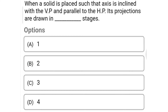Next question: when a solid is placed such that its axis is inclined to the vertical plane and parallel to the horizontal plane, its projections are drawn in how many stages? Option A: 1, option B: 2, option C: 3, option D: 4. The correct answer is option B: 2.